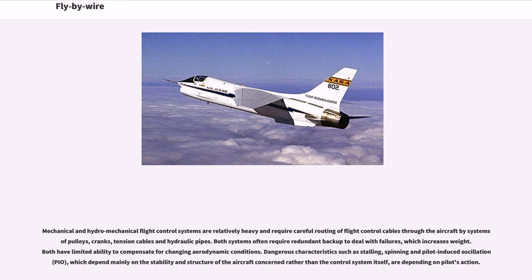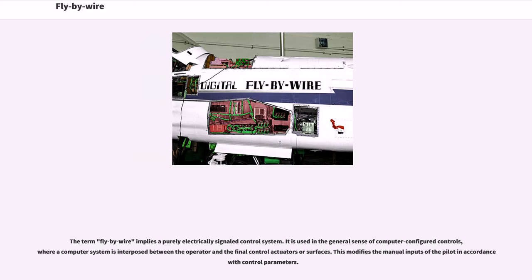Dangerous characteristics such as stalling, spinning and pilot-induced oscillation (PIO), which depend mainly on the stability and structure of the aircraft rather than the control system itself, are dependent on pilot action. The term fly-by-wire implies a purely electrically signaled control system, used in the general sense of computer-configured controls, where a computer system is interposed between the operator and the final control actuators or surfaces, modifying the manual inputs of the pilot in accordance with control parameters.